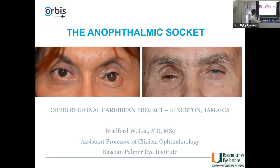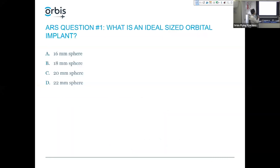Here are just a couple examples of anophthalmic sockets. Question number one: what is an ideal size orbital implant? 16, 18, 20, or 22 millimeters?